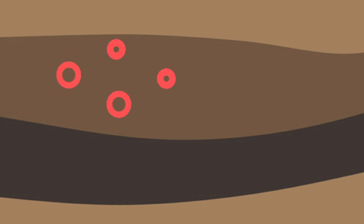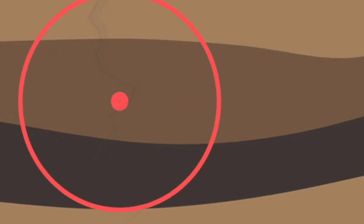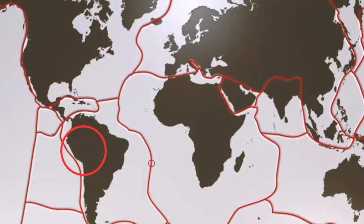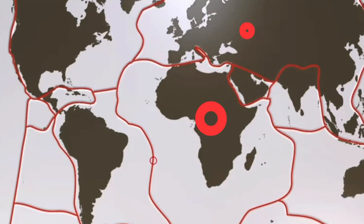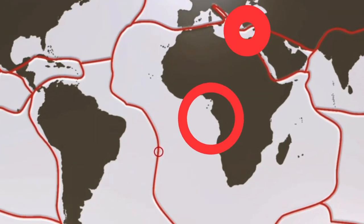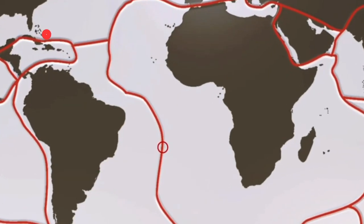The fact is that main shocks always have aftershocks. Aftershocks are the minor or smaller earthquakes that happen in the same location as the main shock afterward. Aftershocks could continue happening for weeks, months, or even years after the main shock.